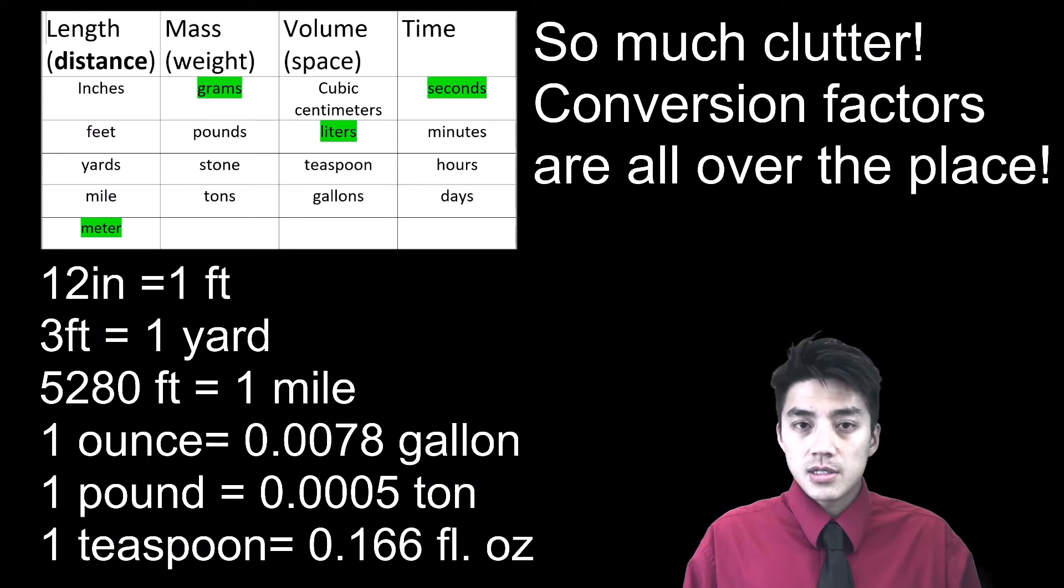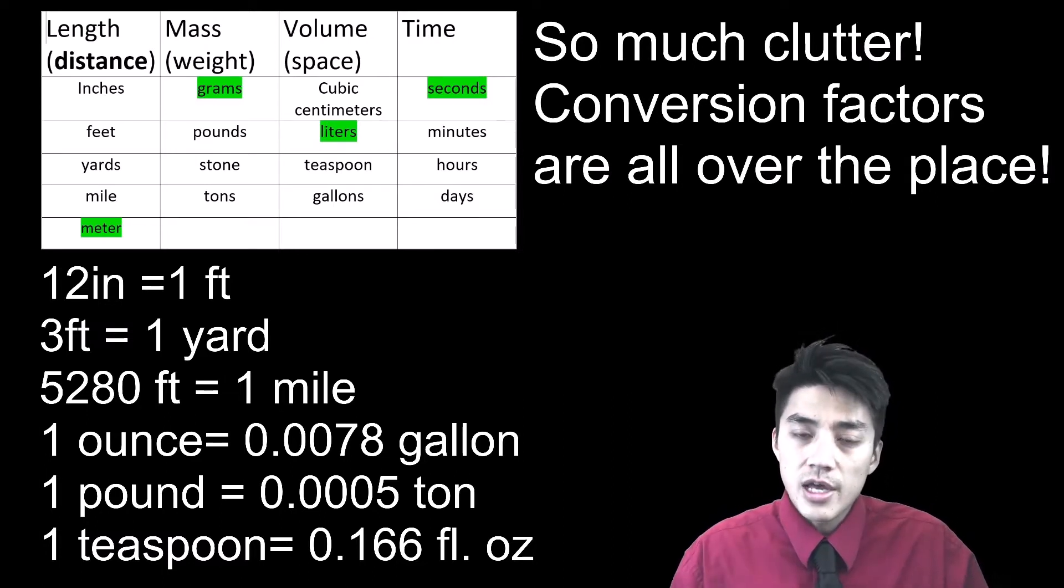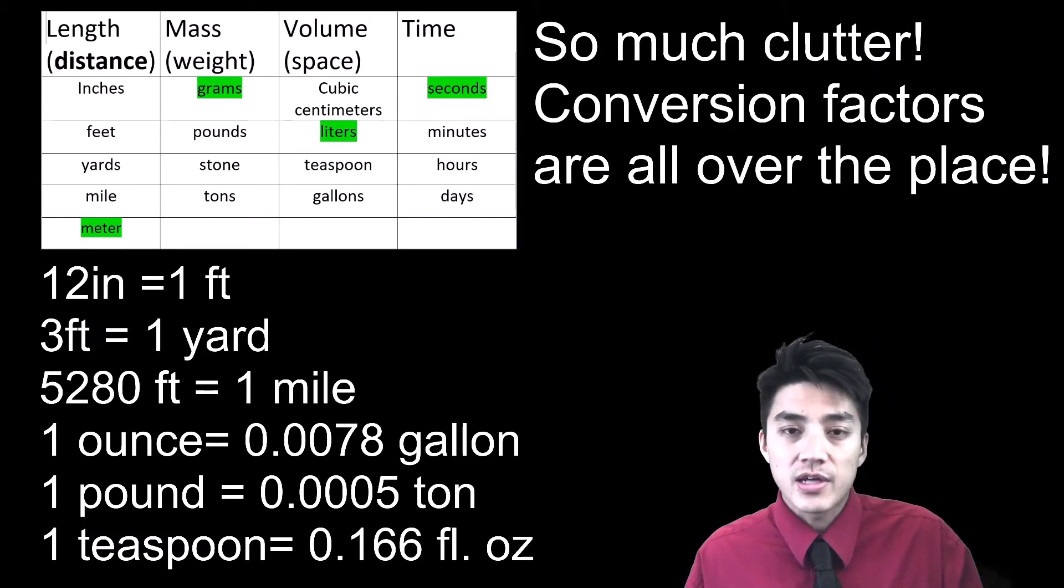So just to reiterate, the system of measurements in the United States is extremely cluttered, and the conversion factors are just all over the place. But with the metric system, they use a base 10 system. It's based on the power of 10, and they'll use Greek prefixes to let you have an idea of what the conversion factors might be. So I think it's less cluttered, and it's a lot more effective.